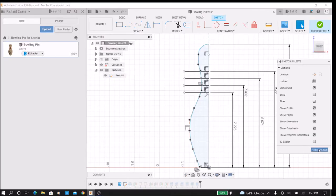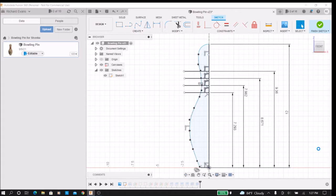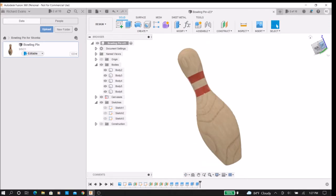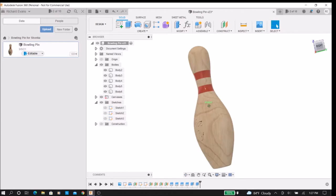We start in Fusion 360 to make a model of the project. Here is a sketch of the profile of the bowling pin which was revolved into a solid object and then saved as an STL file.